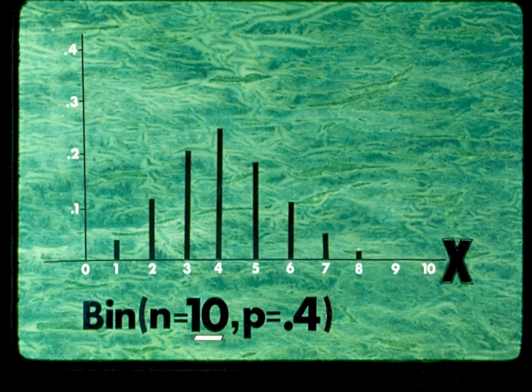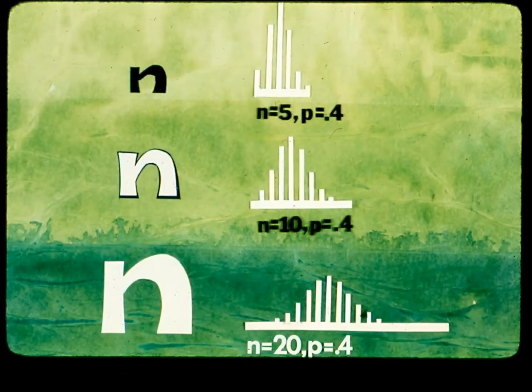When N is increased to 10 patients instead of 5, using the same individual probability P equal to 0.4, there are now 11 possible outcomes ranging from 0 to 10 patients with wound disruption. Adding a third distribution where N equals 20, as N increases from 5 to 10 to 20, the pattern changes as there are more lines of shorter length. Also, the center of the distribution shifts to the right as N increases. This is how N controls the distribution.